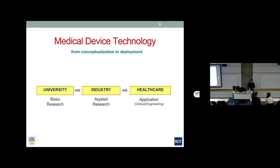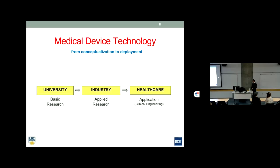Medical device technology: most ideas come from university settings or research labs. UBC now has a big school of biomedical engineering, as does SFU and UVIC. When researchers come up with a promising brilliant idea, it moves to industry, which fine-tunes it and generates medical devices that are then deployed in healthcare or home environments. Biomedical engineers work across basic research, applied research, and application — and this process is called technology transfer.